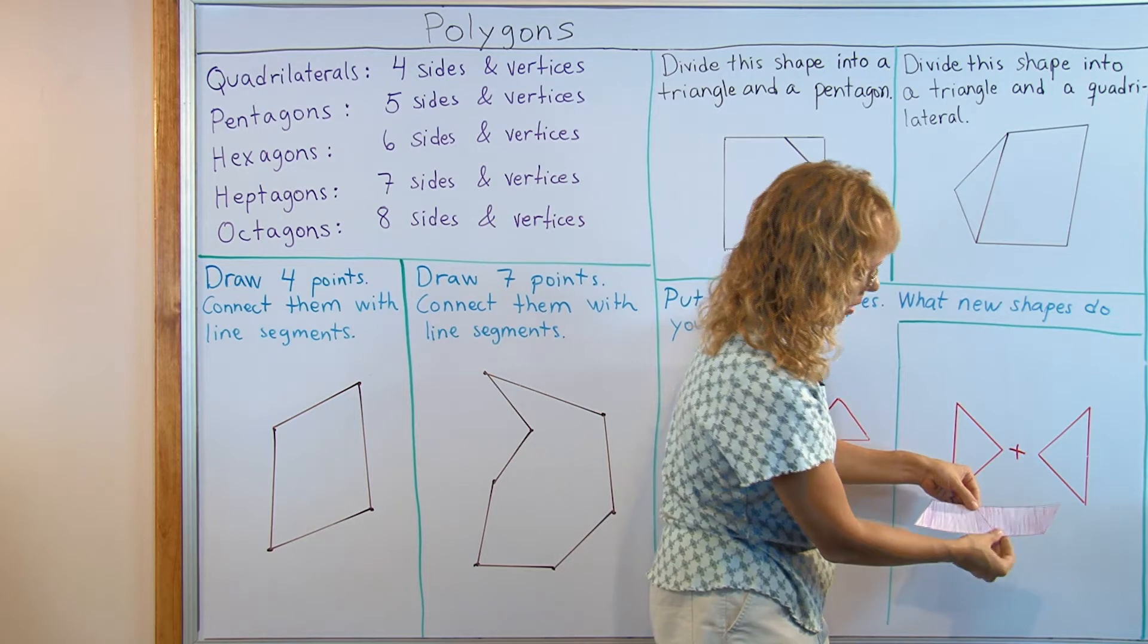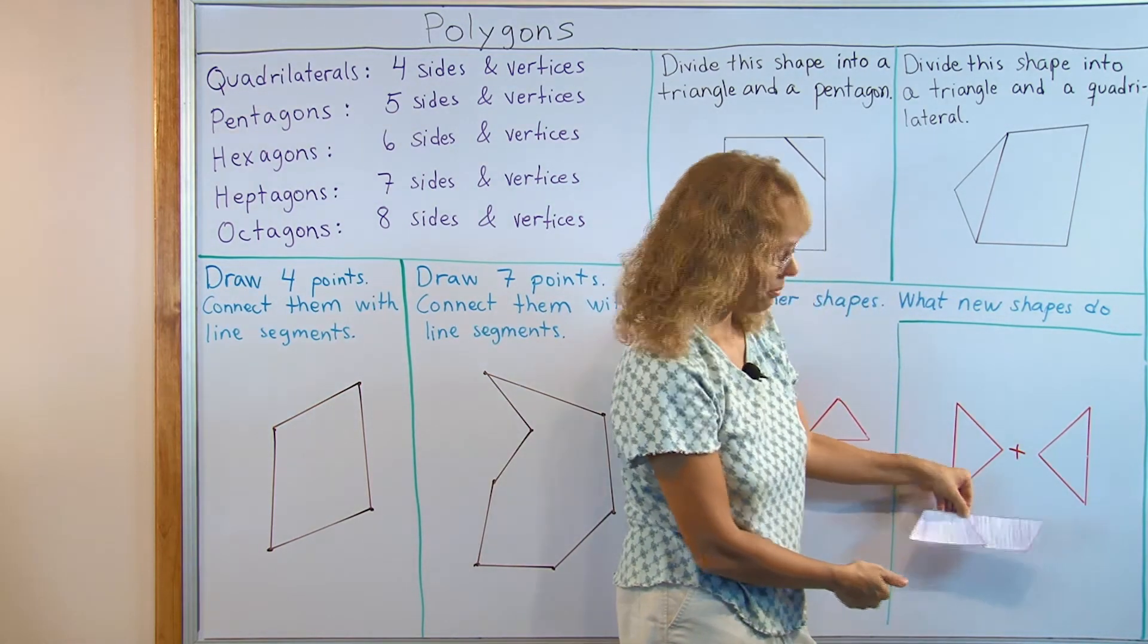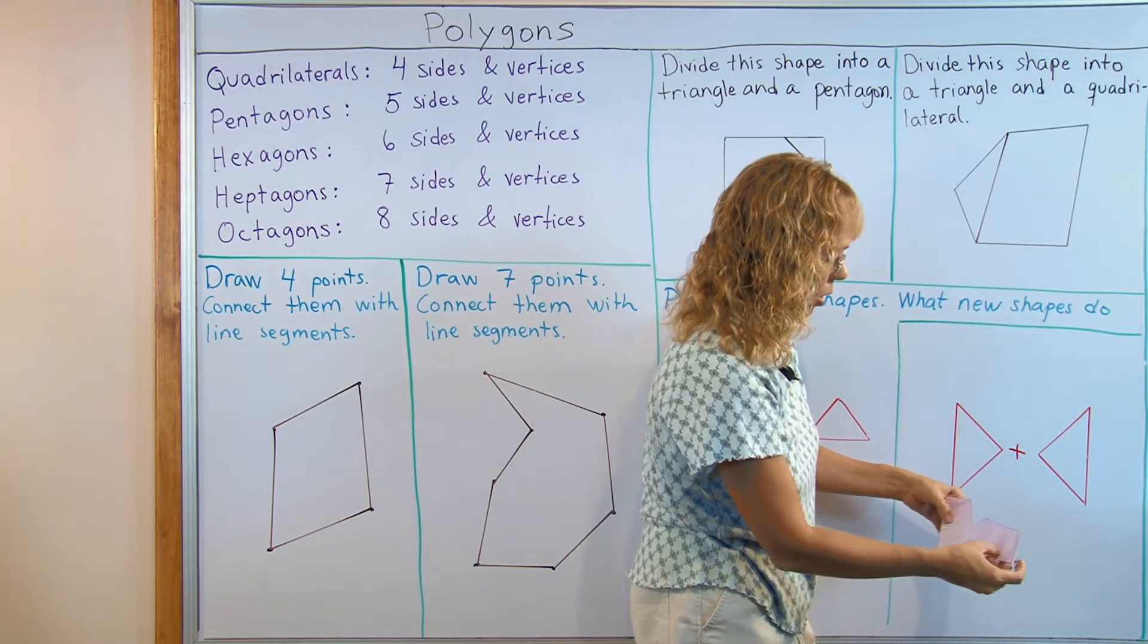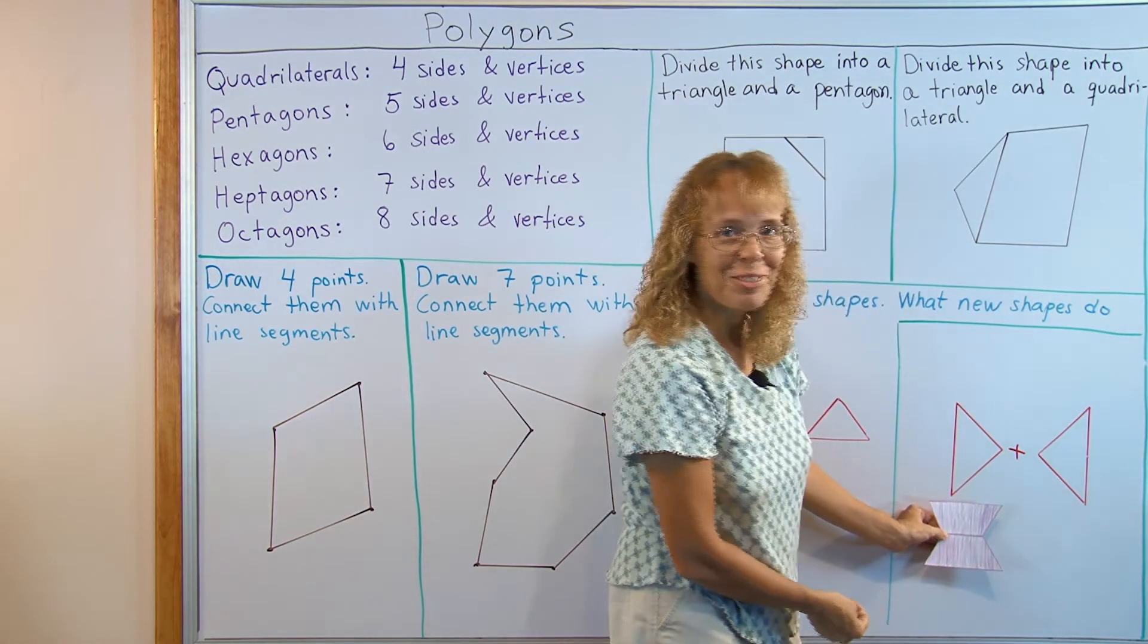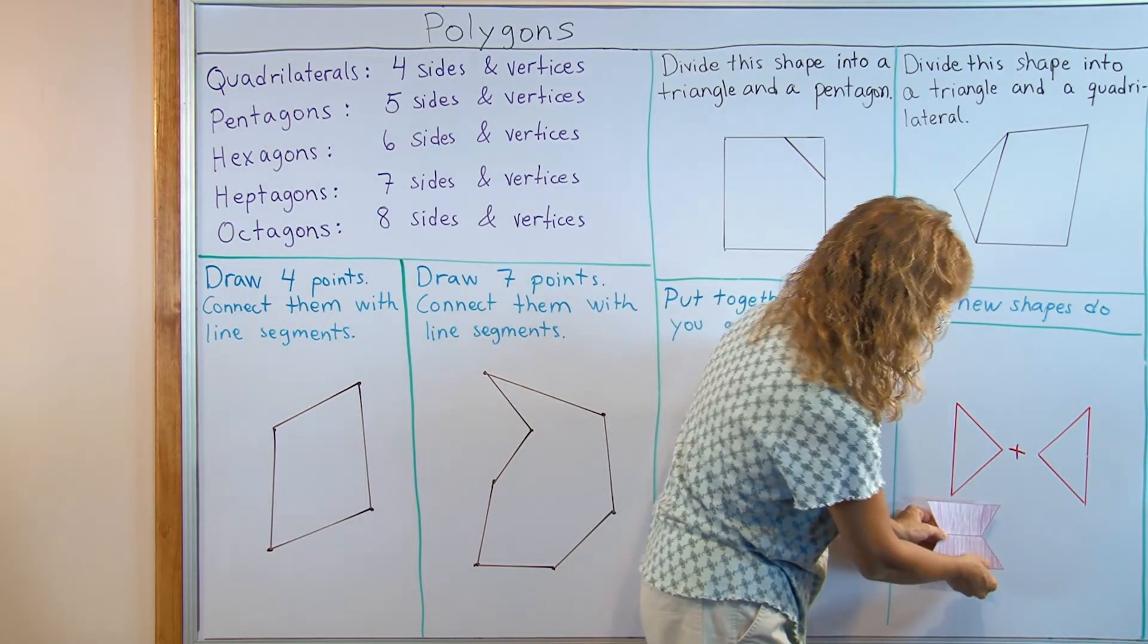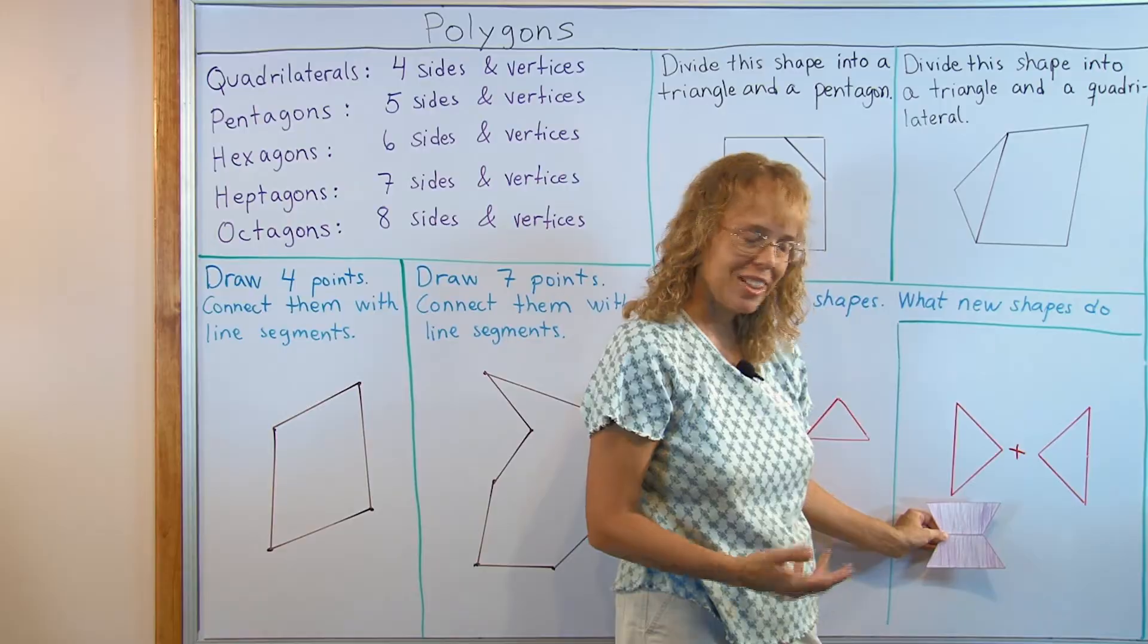I can put these two sides together and then that makes a parallelogram. Or the shortest ones, shortest sides together. And what does it make now? You would have to count the vertices: one, two, three, four, five, six. A hexagon again.